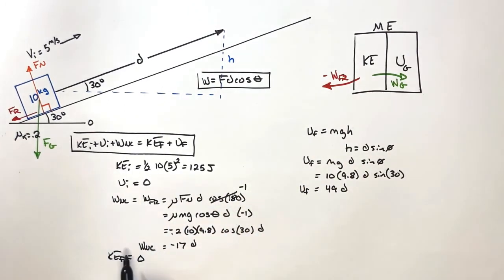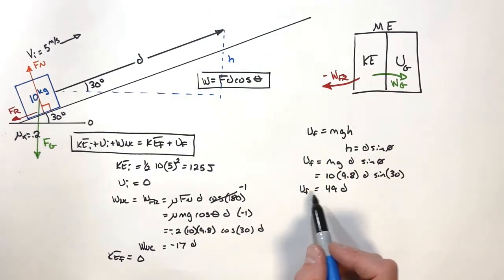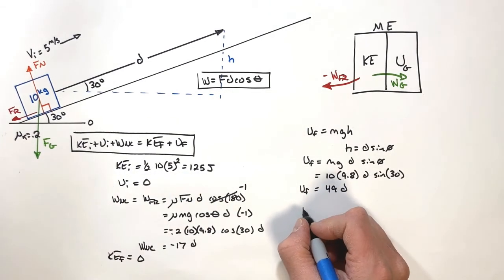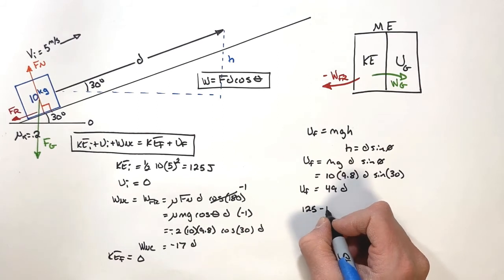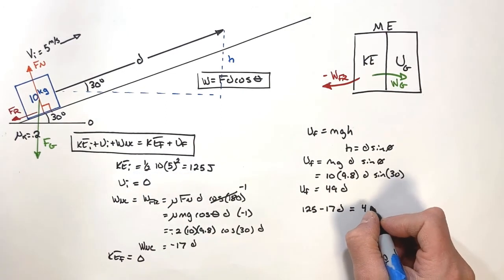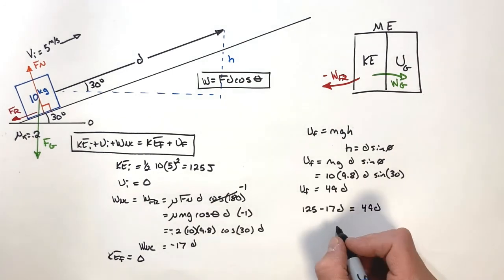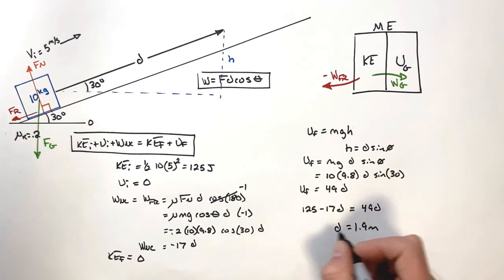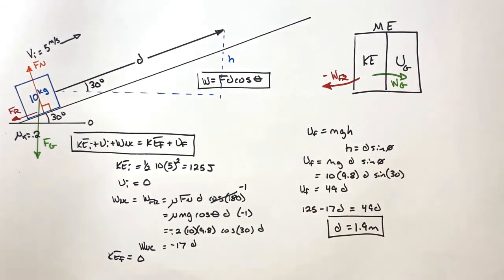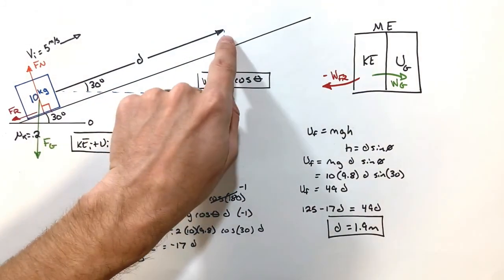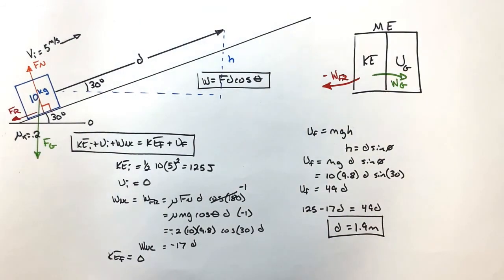Putting it all together in the work-energy theorem: 125 minus 17d equals 49d. Doing the math to solve for d, we find that d equals 1.9 meters. This is the total displacement of the block up the hill. That is how we solve the problem of a block coasting up a hill with friction.